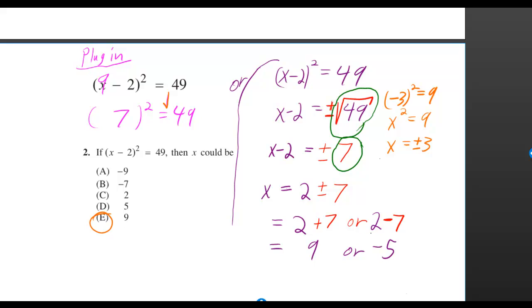In fact, you can check that, because negative 5 minus 2 squared is equal to negative 7 squared. And negative 7 times negative 7 is actually the same thing as 7 times 7. So it is 49. So it checks.